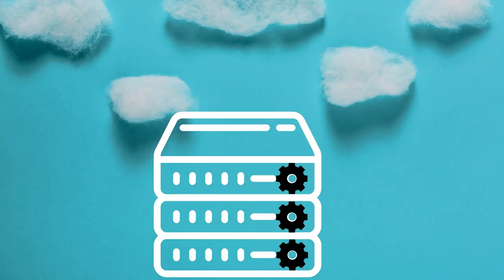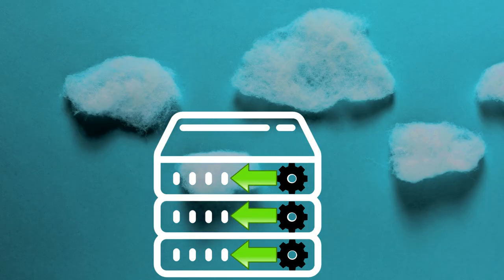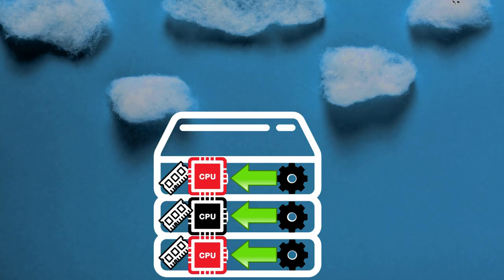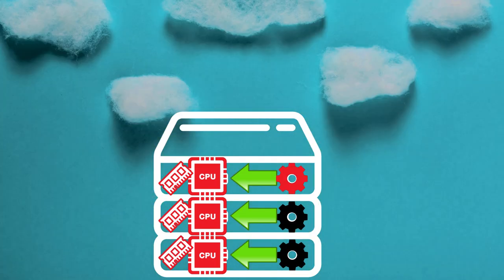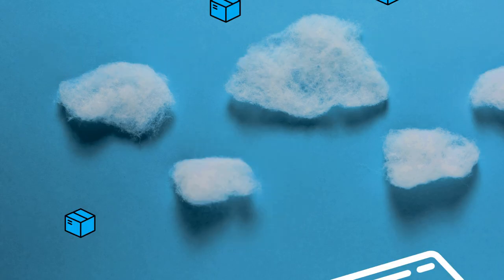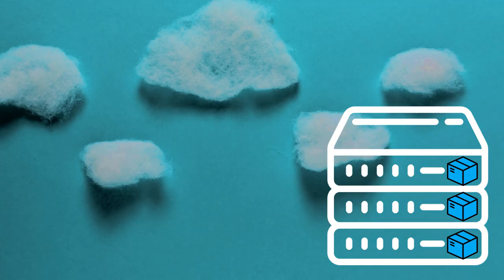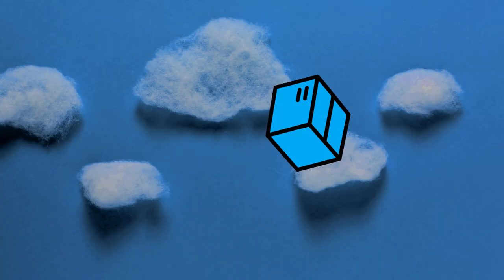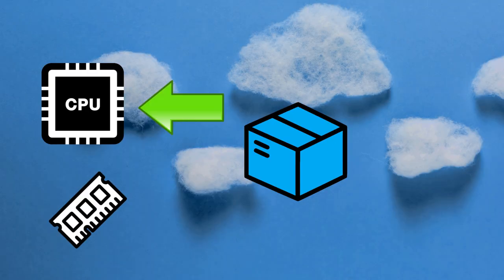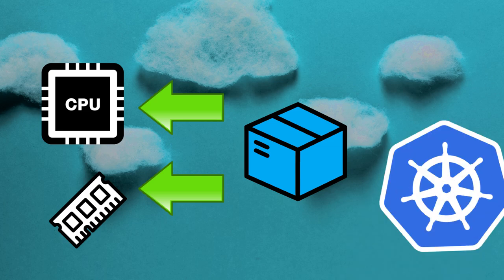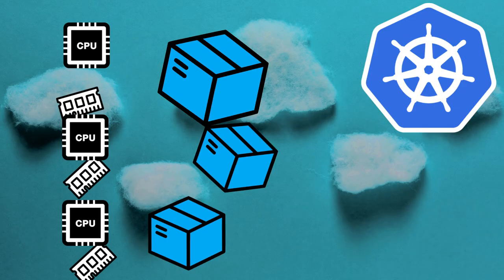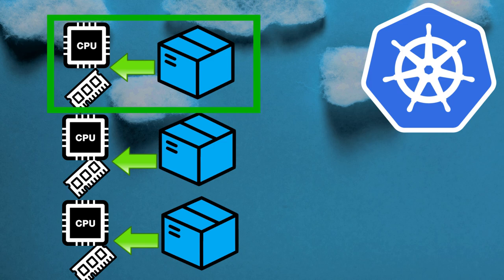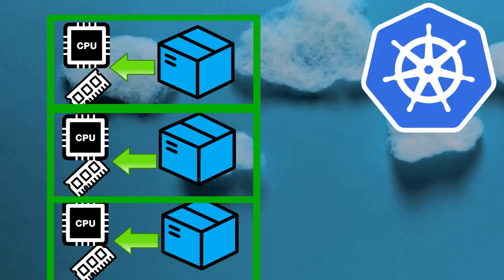In traditional systems we deploy processors onto machines. The processors on the machine will have access to all the CPU and memory, which can lead to performance contention between processors. In Kubernetes we deploy containers to a machine. Containers allow us to restrict the resources the container can see and use. Kubernetes leverages this feature so containers can share machine resources and lower possibilities of resource contention.